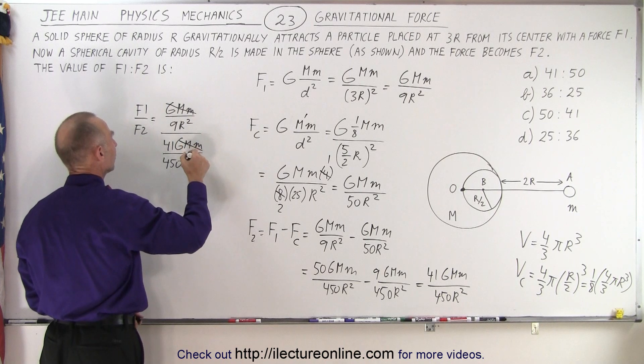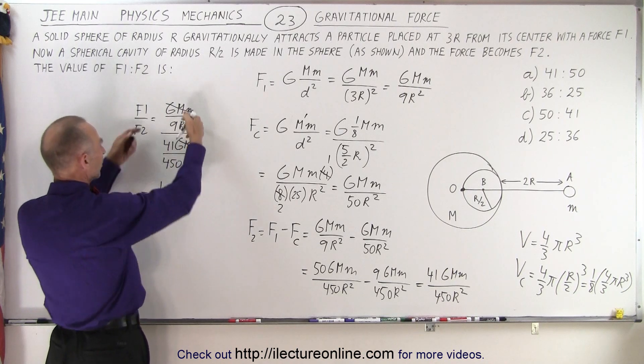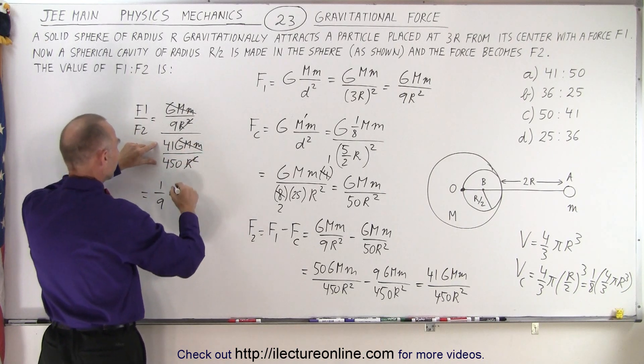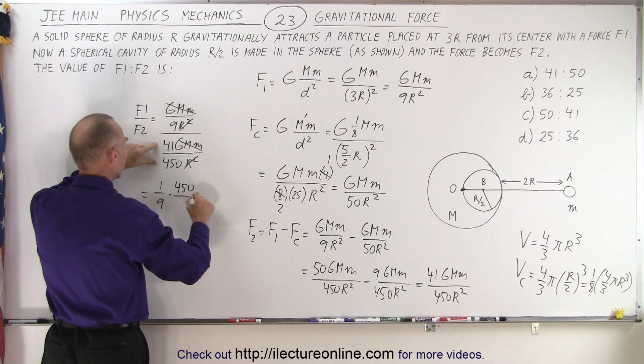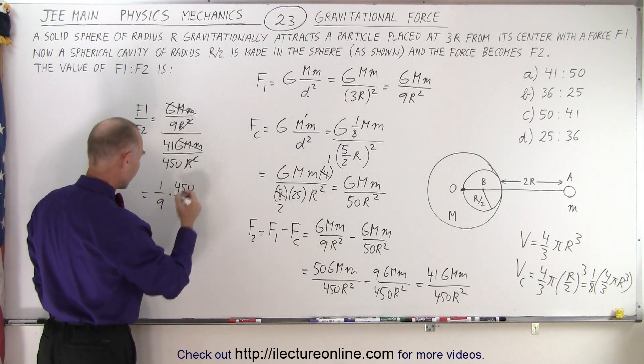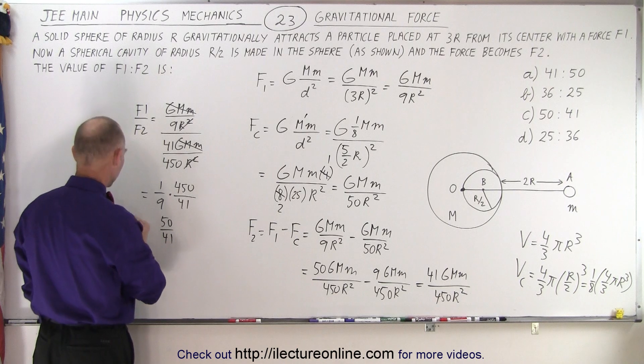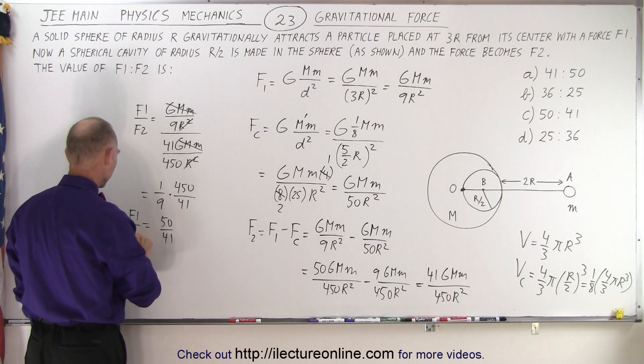So the GMm's cancel out. The r² cancel out. So now we have 1 over 9 times, because I'm dividing by a fraction which is times by the inverse, 450 over 41. So 9 goes into 450, well that goes 50 times, so this becomes 50 over 41 as being the ratio of F1 over F2.